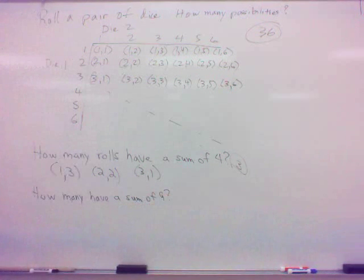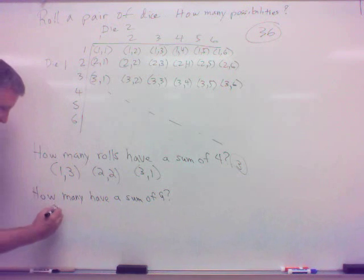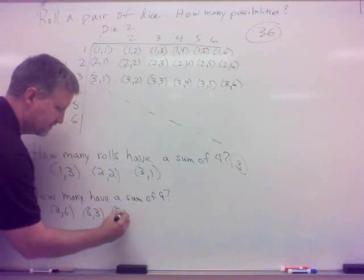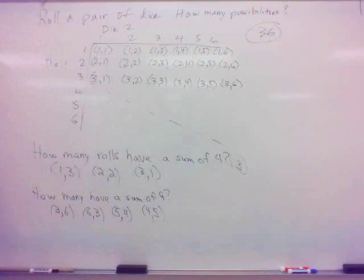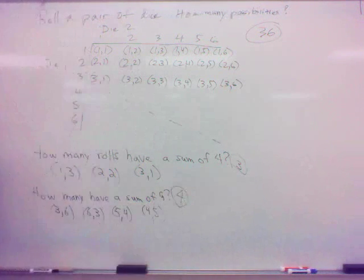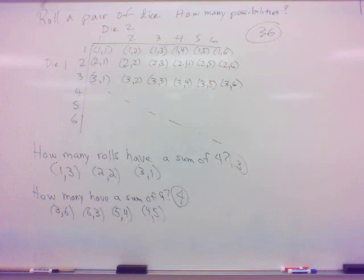All right. So how many have a sum of nine? Well, what would be one of them? Or two of them? Three six? Okay. Well, three six is, and six three is also. What else? Five four? Well, five four is, four five is two. Any others? Two seven? No. The die only goes up to six, doesn't it? So that would be about it, I think. Four of them that have a sum of nine. Okay? Question or concern about the dice?